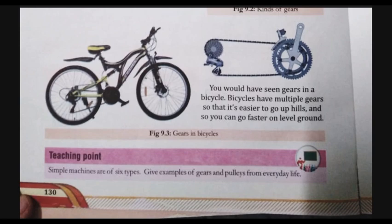You would have seen the gear in the bicycle. Bicycles have multiple gears that is easier to go up the hills. Now, the cycles are also advancing. There are also gears, one or two or three gears. And this is also called bicycles which we use to go to the mountains. You can go faster on the level ground. Is that clear?